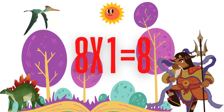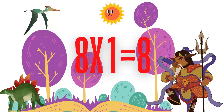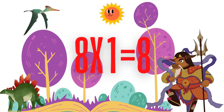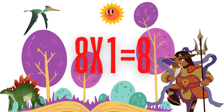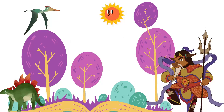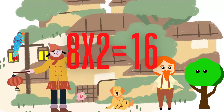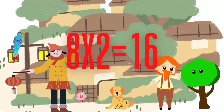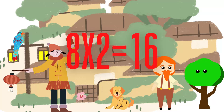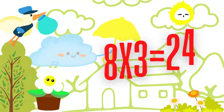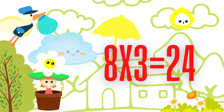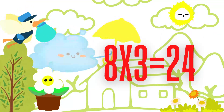8 times 1 is 8. 8 times 2 is 16. 8 times 3 is 24.